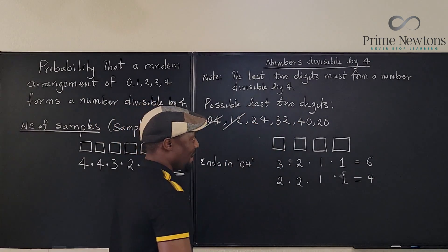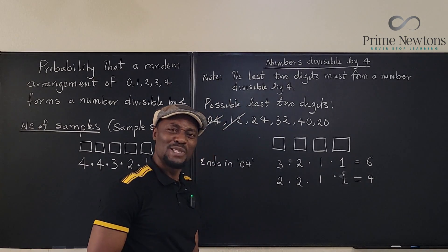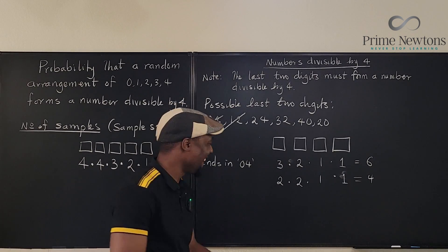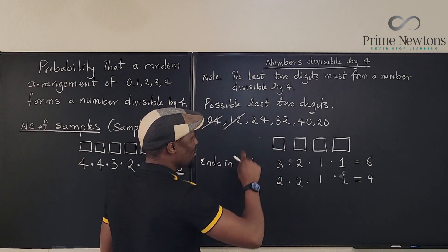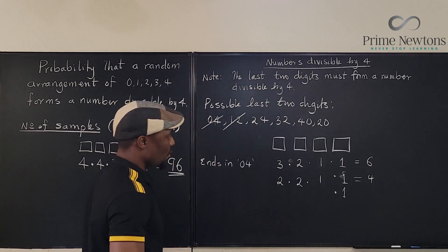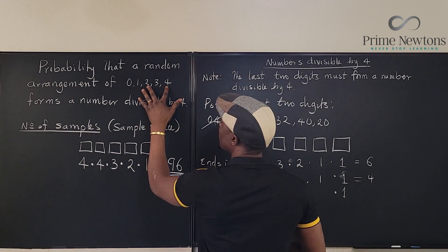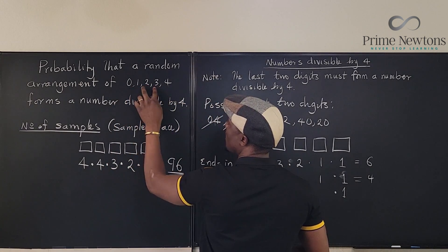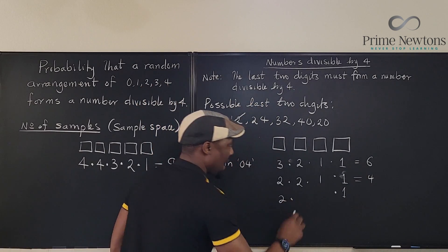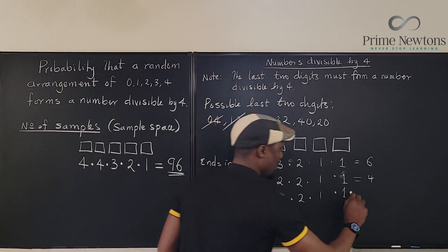For endings in 24: I've used 2 and 4, so the remaining digits are 0, 1, and 3. Again, I can't use 0 as the first digit, so I have 2 options for the first position, then 2 options, and then 1. That's another 4.